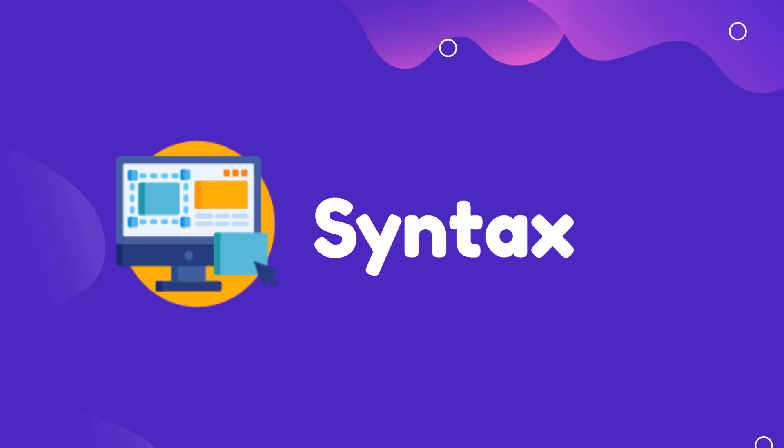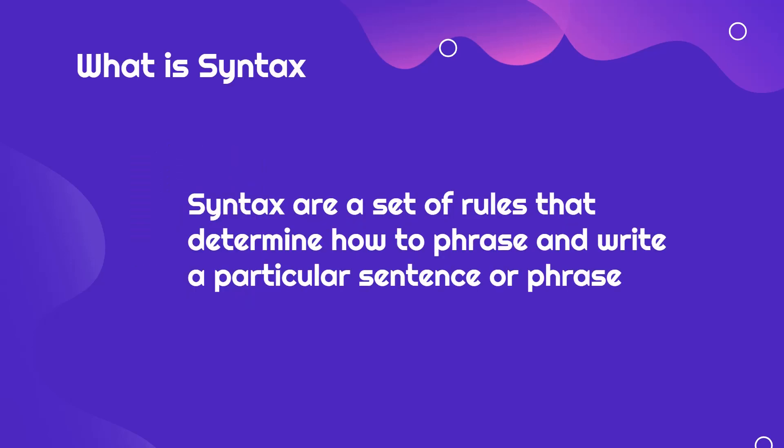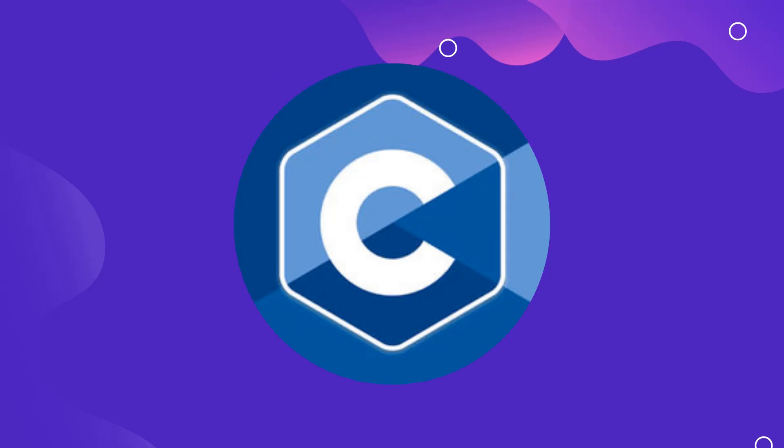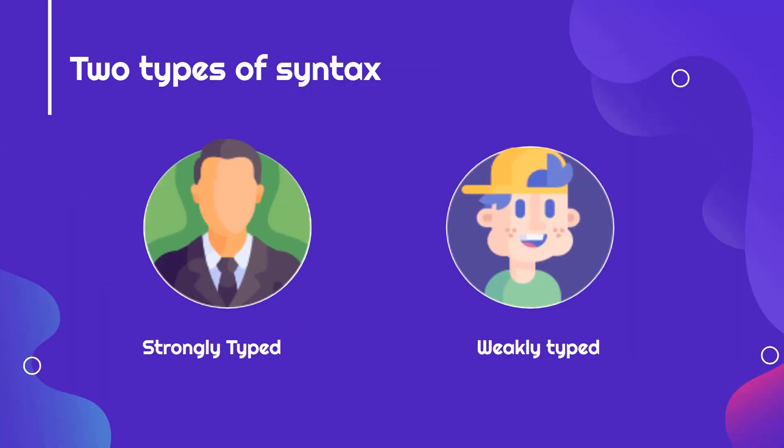There are actually two types of syntaxes. Here's the definition: syntax is a set of rules that determine how to phrase and write a particular sentence or phrase — just like grammar, but it applies to programming languages and has a different name. Every language uses syntax, but there are two types: strongly typed and weakly typed.